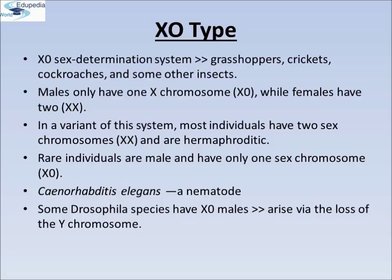Caenorhabditis elegans, frequently used in biological research, is one such model organism. Some Drosophila species also have X0 males, thought to arise by the loss of the Y chromosome.